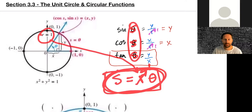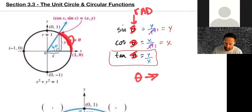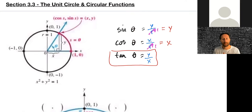If they write it with an s, that usually means we're using radians — since s is an arc length. If they write θ, it usually means degrees. These are the key changes from section 3.1 to 3.3, with some differences already seen in 3.2.